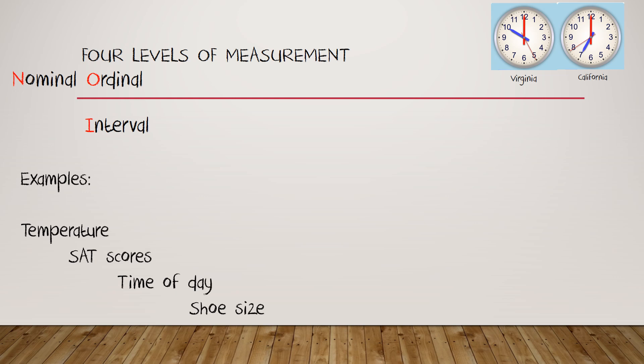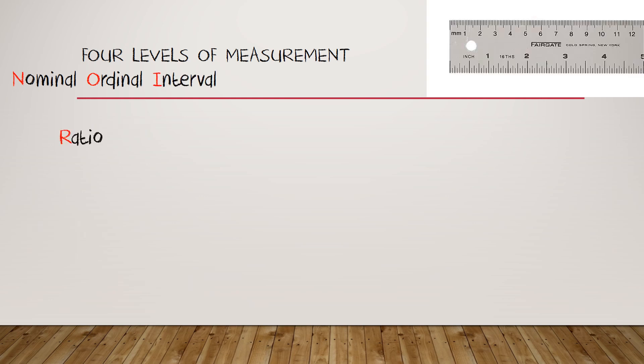Some examples of interval measures: temperature, as we've just discussed. SAT scores - the smallest SAT score is 400, an entirely arbitrary number. Time of day, we've already discussed. Shoe size as well. A men's shoe size of zero is actually an eight-inch long foot. And obviously, this choice is an arbitrary one as well.